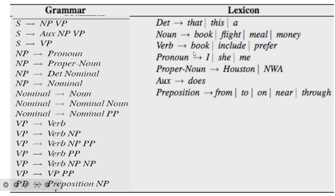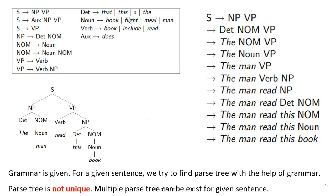Another grammar example is given with non-terminal and terminal symbols. When statements are generated from this lexicon, we use the grammar to parse the statement. For example, the sentence 'The man read this book' is given. For a given sentence we try to find the parse tree with the help of the grammar. Note that a parse tree is not unique — multiple parse trees can exist for a given sentence.